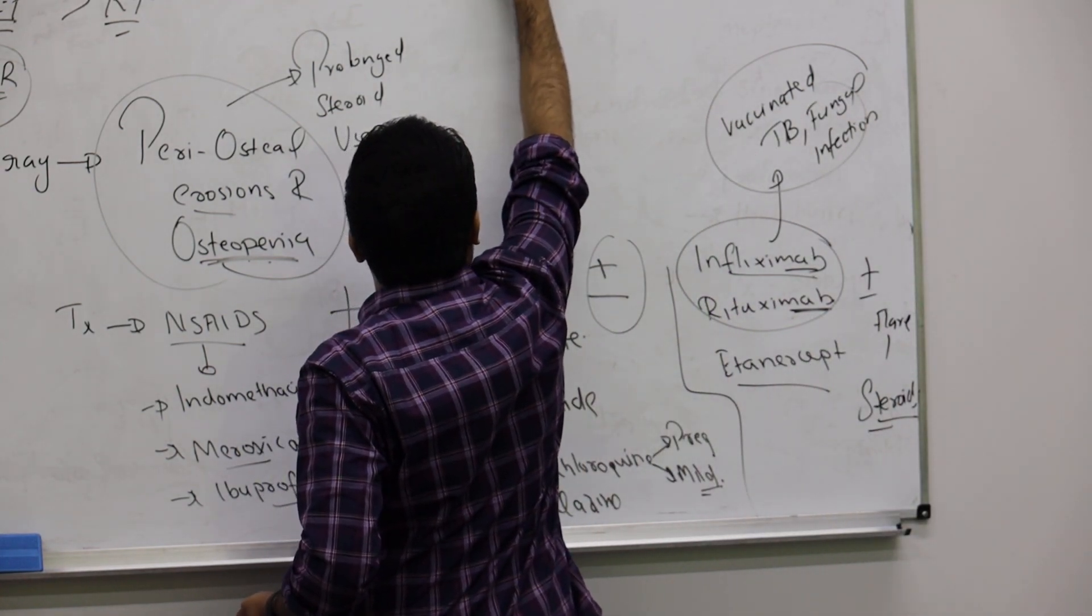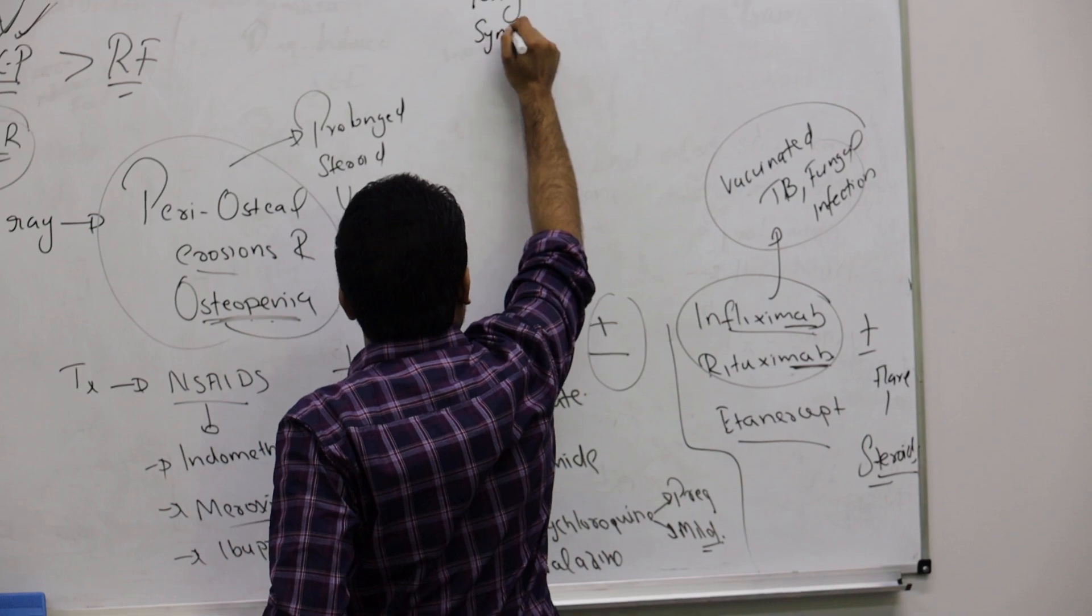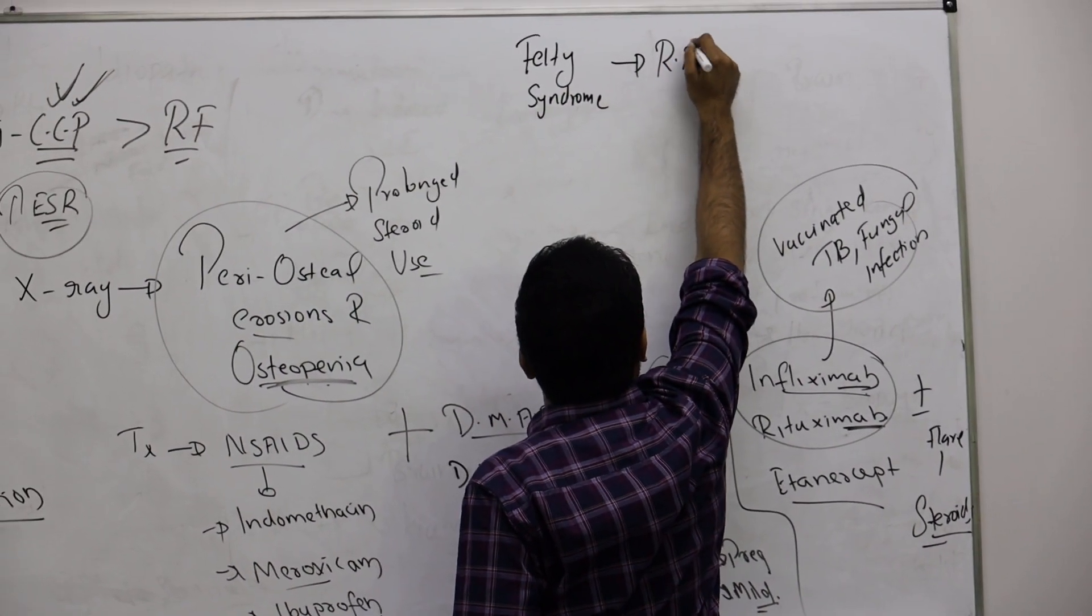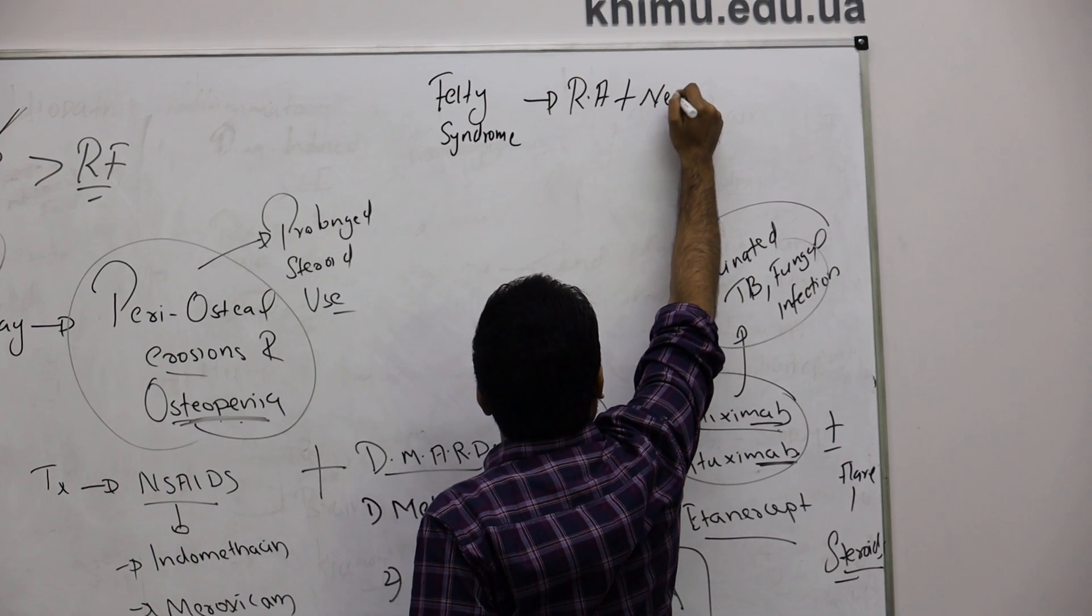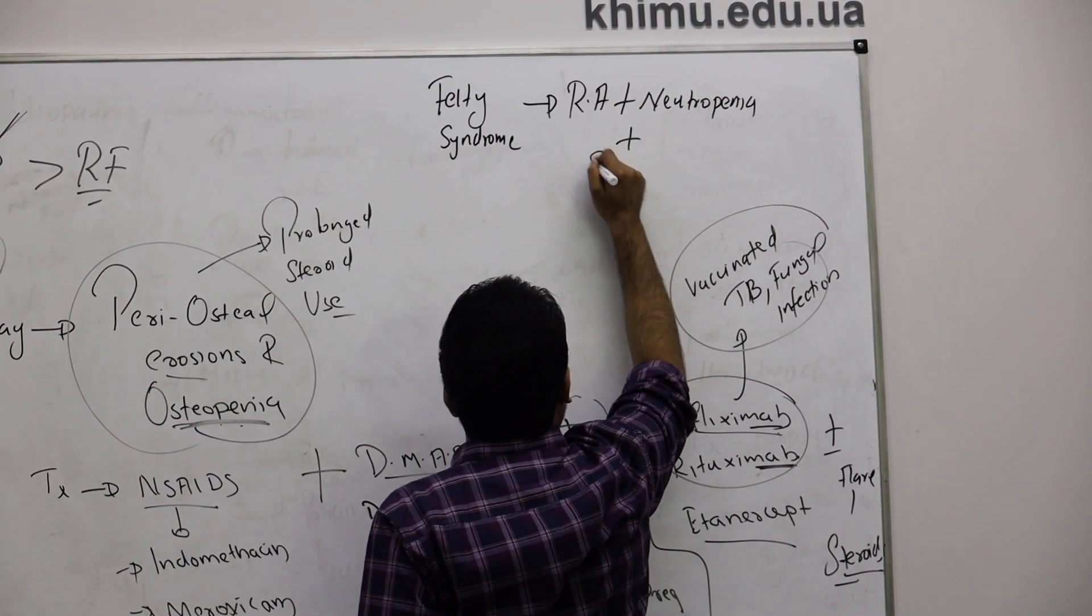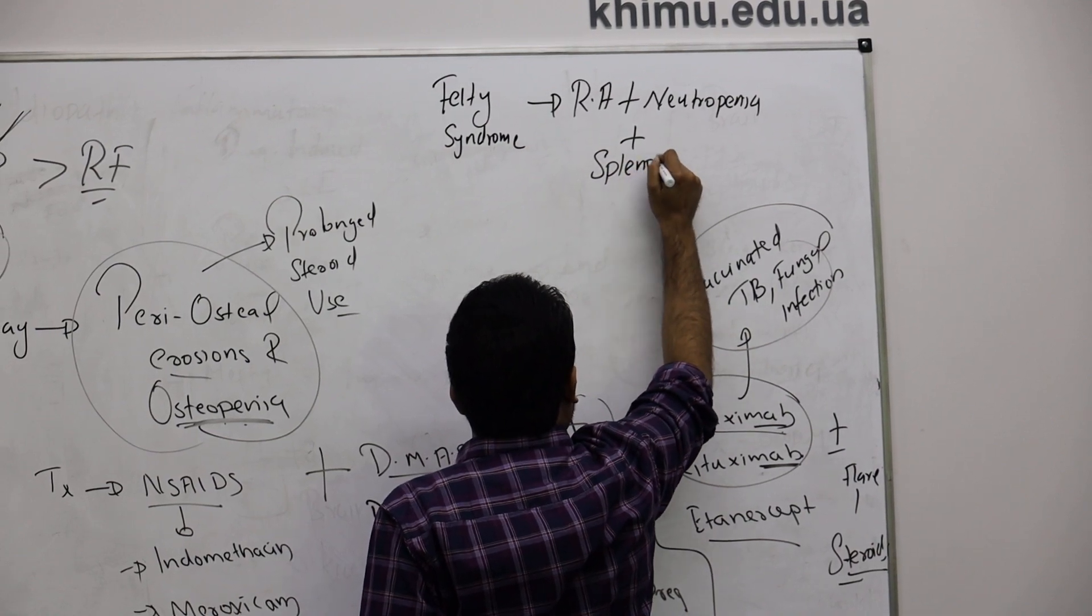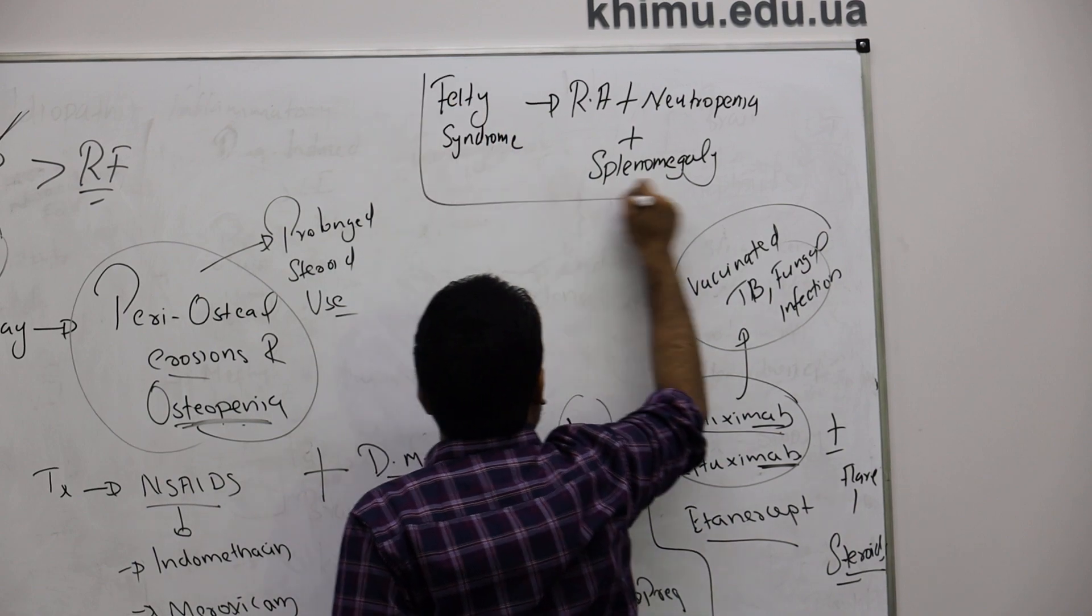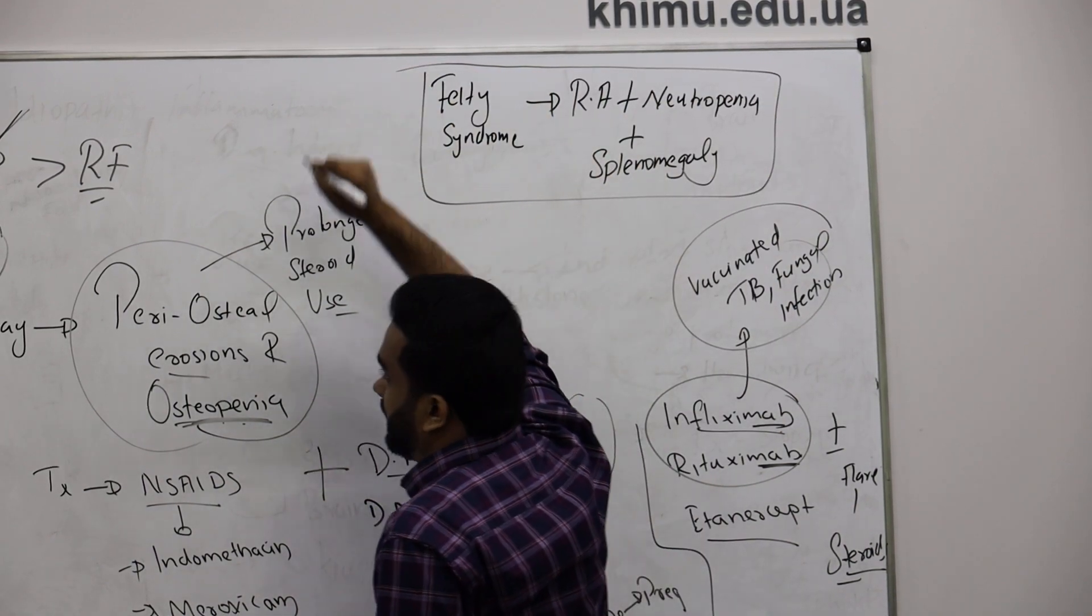Felty syndrome means someone has rheumatoid arthritis, neutropenia, and splenomegaly. That combination, we call Felty syndrome.